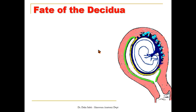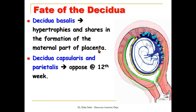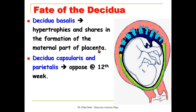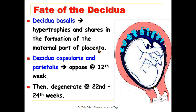The decidua basalis will hypertrophy and share in the formation of the maternal part of the placenta. The decidua capsularis and parietalis, due to the growth of the embryo, will come into contact with each other by the twelfth week of development and then degenerate because of the growth of the gestational sac.